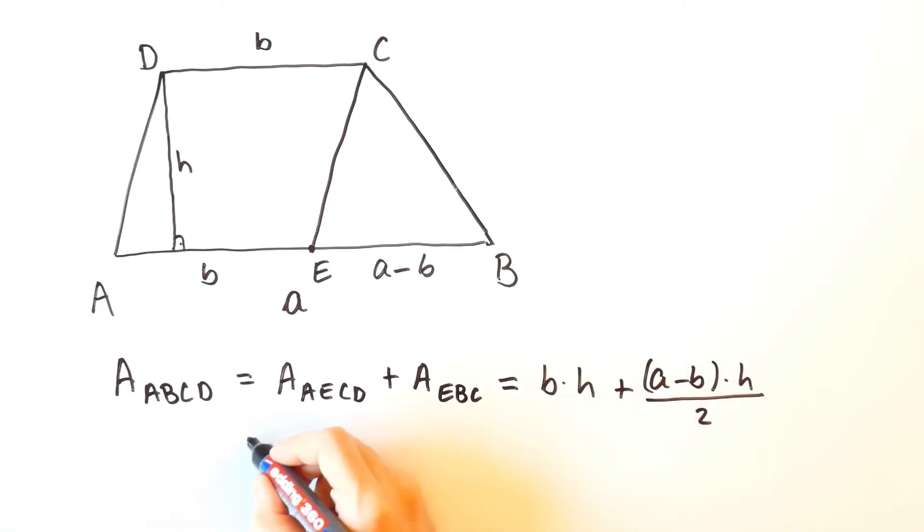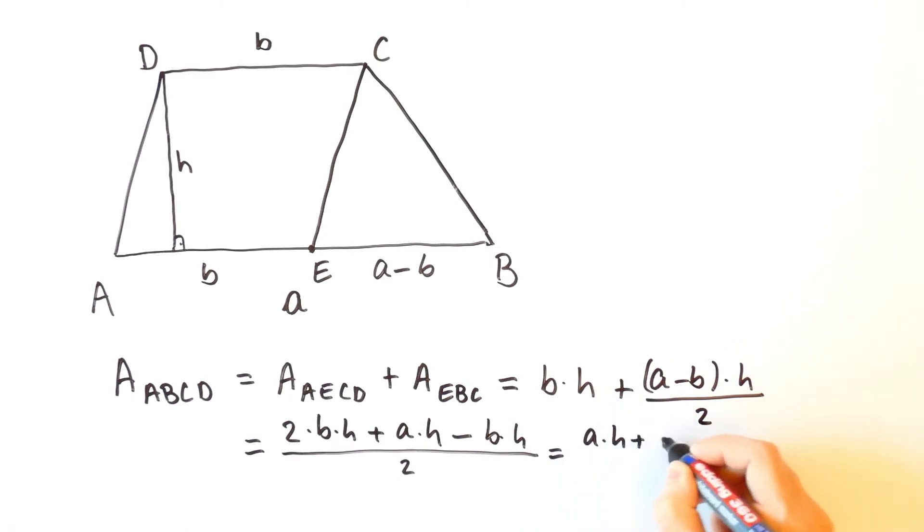And this is equal to 2 times B times H plus A times H minus B times H over 2 which is equal to A plus B over 2 times H.